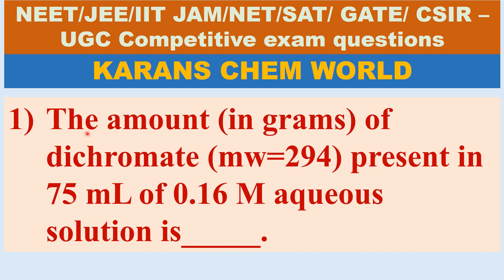The question is: the amount of potassium dichromate present in 750 ml of 0.16 molar aqueous solution is dash.